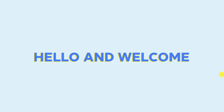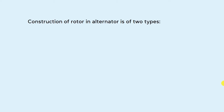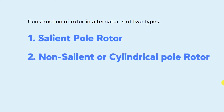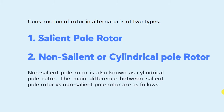Hello and welcome to my YouTube channel. In this video, we will talk about the construction of rotor in alternator. The construction of rotor in alternator is of two types: salient pole rotor and non-salient, or cylindrical pole rotor. We will discuss the main difference between salient pole rotor and non-salient pole rotor in detail.